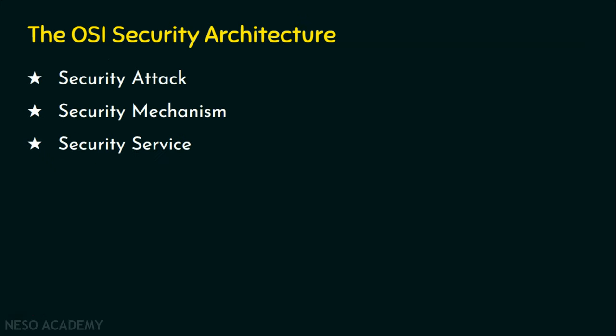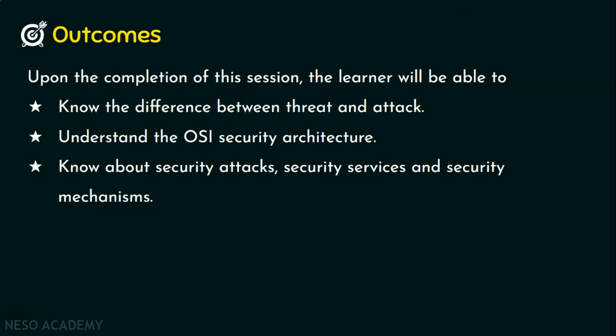We are done with the three components of the OSI security architecture: the security attacks, the security mechanisms, and the security services. In the coming lectures, we will deal with these elaborately. I hope now you understood the difference between threat and attack, the OSI security architecture, and the security attacks, security services, and security mechanisms. Thank you for watching.